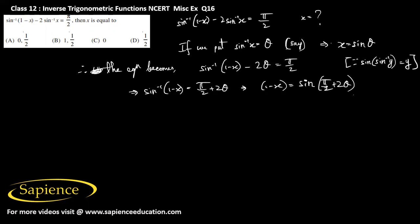Now sine of (pi by 2 plus y) is equal to cos y, so sine of (pi by 2 plus 2 theta) equals cos 2 theta. Therefore 1 minus x equals cos 2 theta.